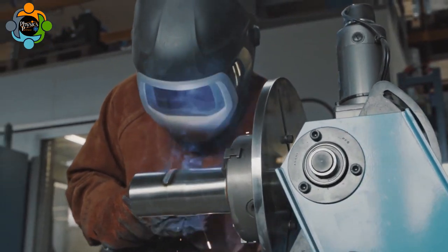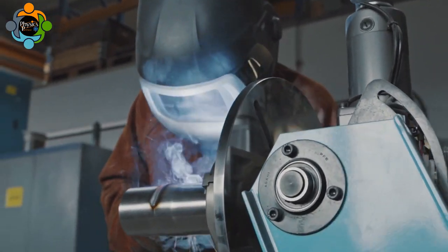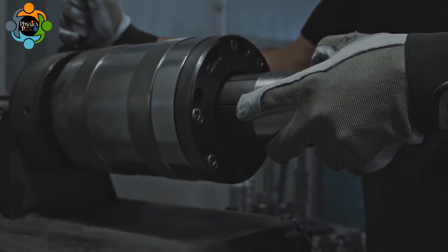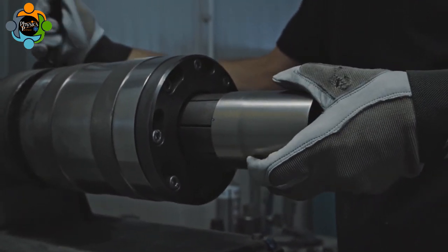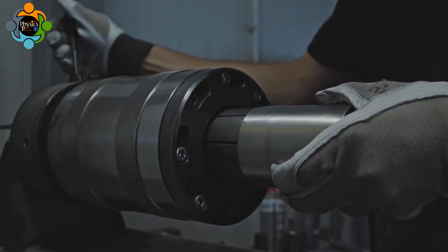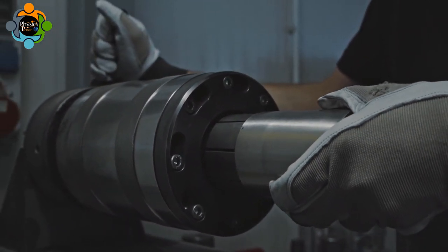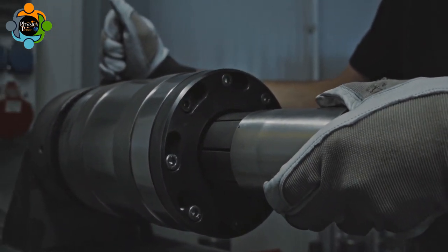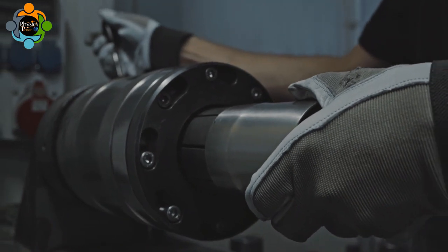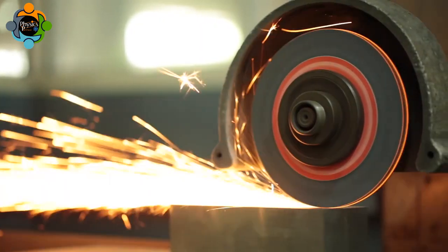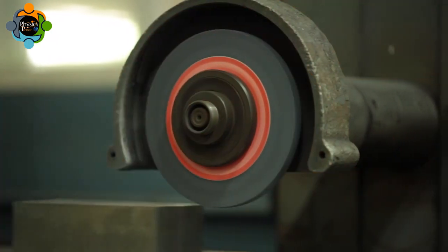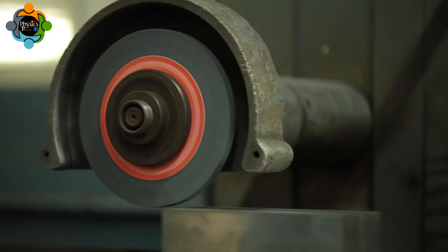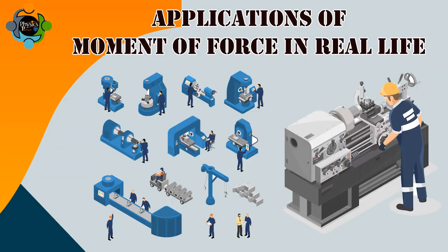It plays a major role in mechanics as it helps us understand how different forces can affect an object in rotational motion. The primary objective of using moment of force is to measure the capacity of a force to rotate an object — telling us how much force is needed to overturn or spin an object, which is crucial in determining the stability of any structure, machine, or object.